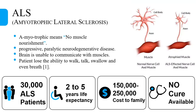It normally gives a person a very short time of 2 to 5 years to live from the time of diagnosis, and it costs a family above 0.15 to 0.25 million dollars during the course of the disease. Despite serious efforts, no cure is currently available for ALS.